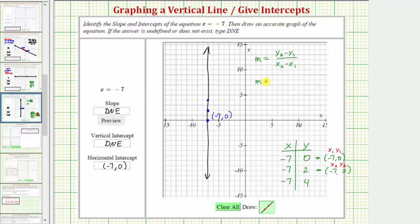Slope m is equal to y sub two minus y sub one, so two minus zero, divided by x sub two minus x sub one is negative seven minus negative seven, which equals two divided by, well negative seven minus negative seven is negative seven plus seven, which is zero.